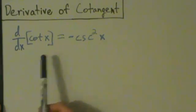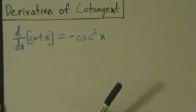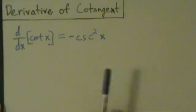So this is kind of analogous to the tangent derivative, right? Remember, the derivative of tangent is secant squared, so here the derivative of cotangent is negative cosecant squared. So, kind of interesting.